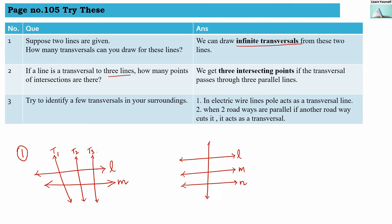So here you can see that there are three different points where this transversal T is intersecting all these three lines at three different points.